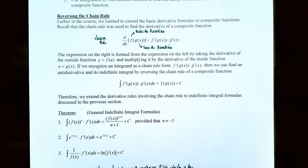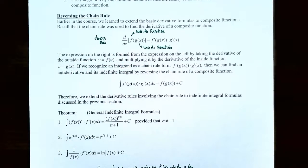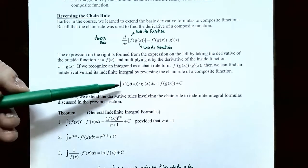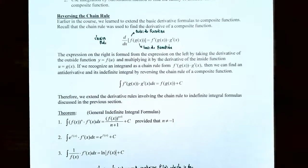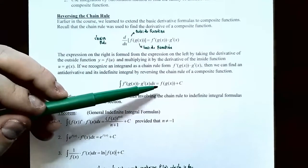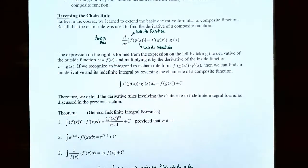So how do we go backwards when we want to find the family of antiderivatives? It's going to be the same kind of concept — we want to identify what is the inside and the outside function of the integrand. If we can recognize that the integrand is of the form for the chain rule, where f prime of g of x times g prime of x occurs in the integrand, we can find out what the composite function was before we used the chain rule to find its derivative. So if we have the integral of f prime of g of x times g prime of x dx, then we can reverse the chain rule: this is f of g of x plus c for the family of antiderivatives.